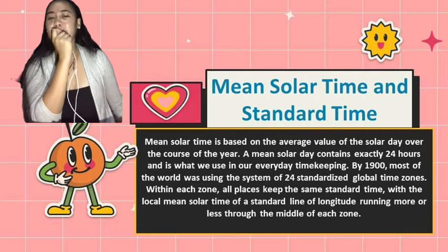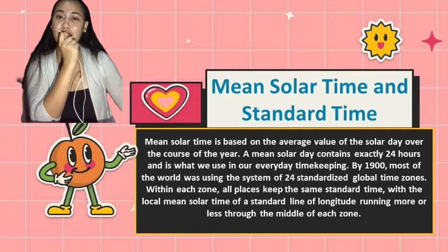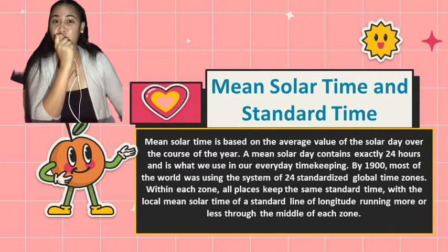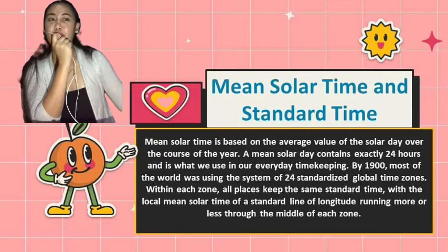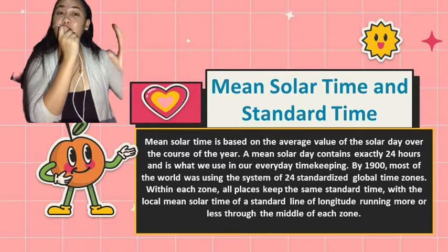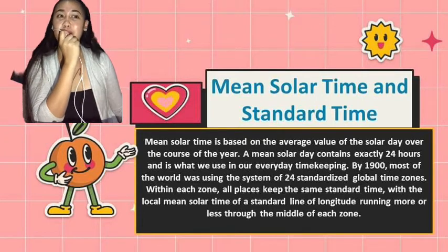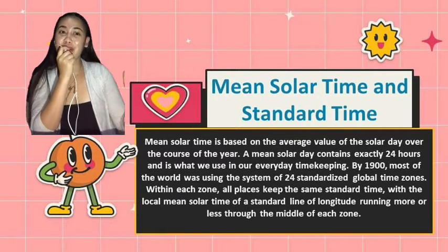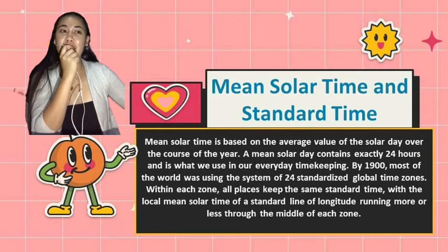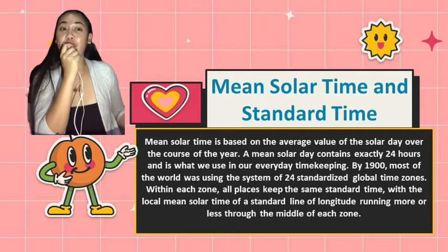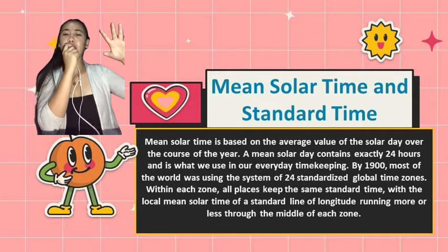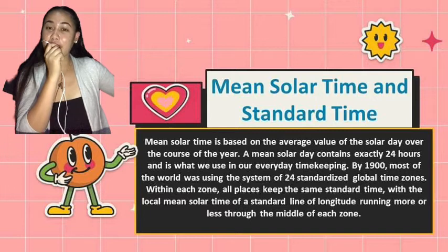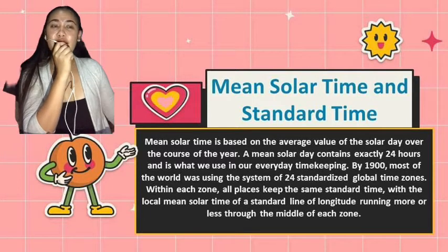Although mean solar time has the advantage of progressing at a uniform rate, it is still inconvenient for practical use because it is determined by the position of the Sun — for example, noon occurs when the Sun is overhead. Because we live on a round Earth, the exact time of noon differs as you change your longitude by moving east or west. In the 1990s, most of the world adopted a system of 24 standard time zones. Within each zone, all places keep the same standard time corresponding to the local mean solar time of a standard longitude. Almost all countries have adopted one or more standard time zones.